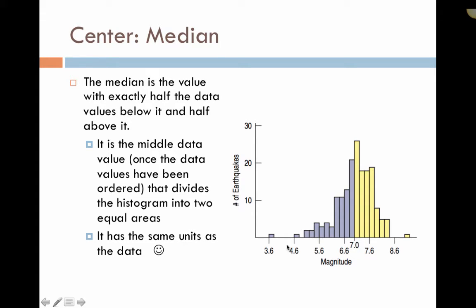The mean feels like the center because it's the point where the histogram balances. Here we have the histogram of the earthquakes on a different scale. That's why it looks slightly different. But you can see the little balance down here, where at 7, it seems to be where the histogram is actually balancing.